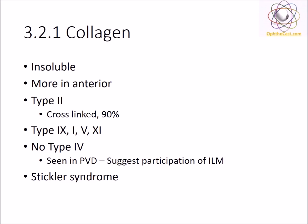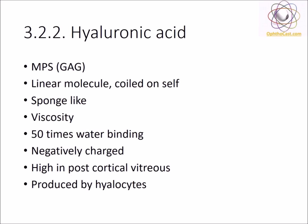Type 4, which is specific to basement membrane, is absent in vitreous but seen in situations of posterior vitreous detachment. Vitreous collagen is affected by systemic collagen disorders affecting collagen types 1, 2, 5, 9, and 11, like Stickler syndrome. The third major component is hyaluronic acid. This molecule coils on itself and has high viscosity. Hyaluronic acid can absorb water like a sponge and is negatively charged. These mucopolysaccharides are produced by the hyalocytes.